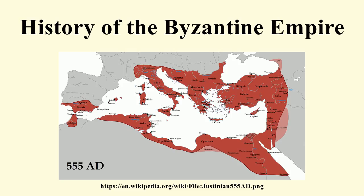Constantine built upon the administrative reforms introduced by Diocletian; he stabilised the coinage and made changes to the structure of the army. Under Constantine, the empire had recovered much of its military strength and enjoyed a period of stability and prosperity. He also reconquered southern parts of Dacia after defeating the Visigoths in 332, and was planning a campaign against Sassanid Persia as well.